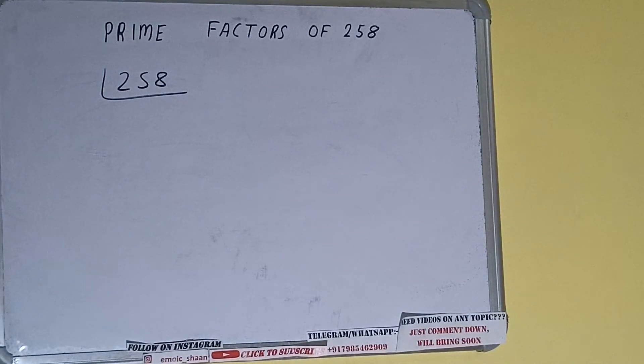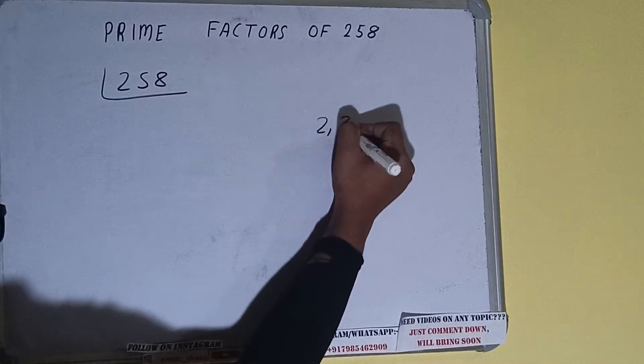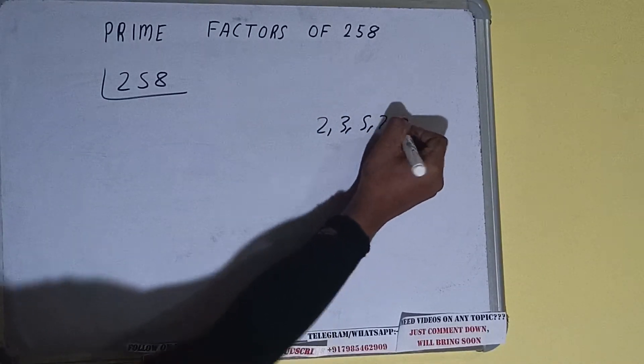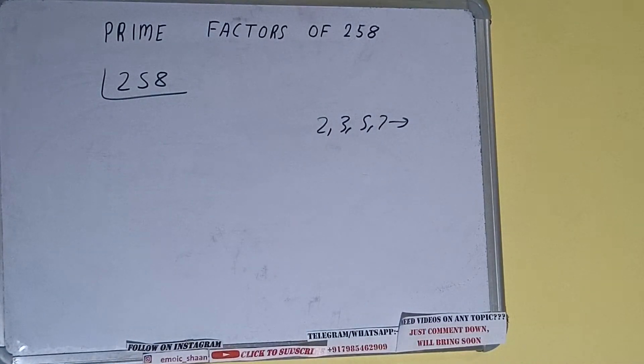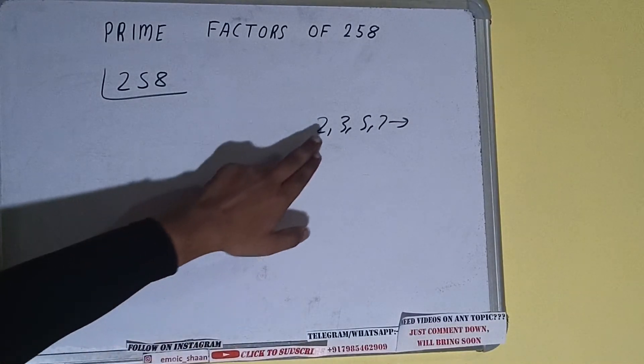...is what are prime numbers. So prime numbers are numbers that are divisible by 1 and the number itself, like 2, 3, 5, 7, and so on. All right, so we'll check with the lowest prime number we have, that is 2.